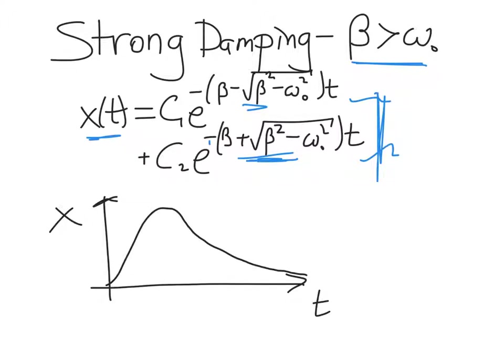As shown in the book on page 177, depending on the initial conditions — initial velocity and displacement — you can get a solution where the oscillator jumps up in displacement and then slowly damps out with time as a result of these two exponentially decaying functions. There's not even really an oscillation for strong damping; the damping term dominates and you get no oscillations at all.